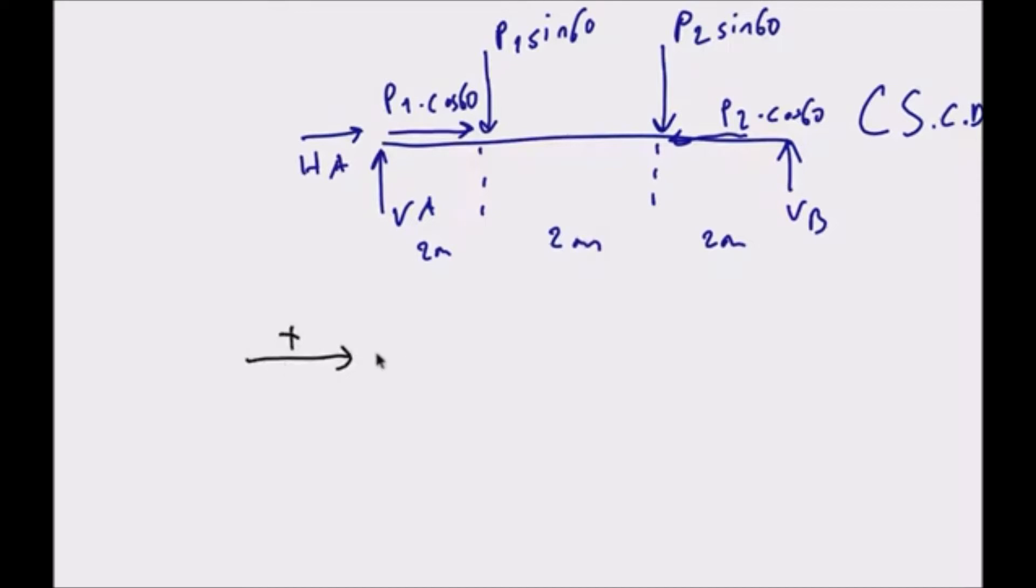Total Fx is zero. I accept positive to right side. It doesn't matter left or right, but whatever I accept should remain the same until the end of the solution. Now I write these equations: HA plus P1 times cos 60 minus P2 times cos 60 is zero. When we calculate, HA is minus 10 kN.